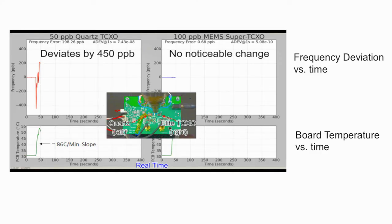The screenshot shown on this slide is an excerpt from a video showing side-by-side testing of one of the industry's best quartz TCXOs versus an Elite MEMS TCXO. In this screen capture, the frequency transient resulting from application of hot air from a heat gun is shown. The heat gun induces a very fast thermal transient of 86 degrees Celsius per minute as measured by a temperature sensor on the printed circuit board.